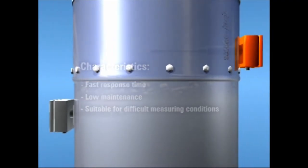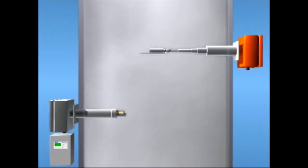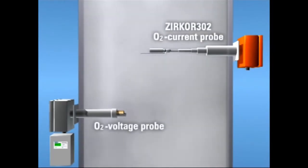We shall now compare two different technologies for measuring oxygen: one is the widely used voltage probe, the other is the Circor 302 which is based on zirconia current principle.